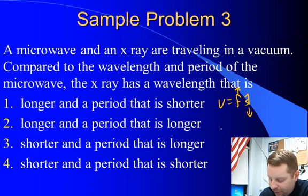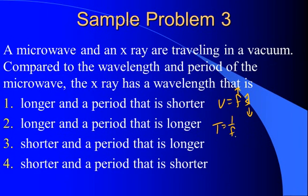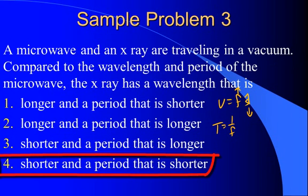X-rays are more energetic than microwaves. Now, as far as the period, remember period is one over frequency. So the bigger frequency we have, the smaller period. Therefore, compared to a microwave, an X-ray has a wavelength that is shorter and a period that is shorter. Correct answer must be number four.